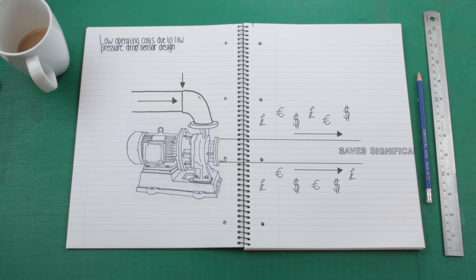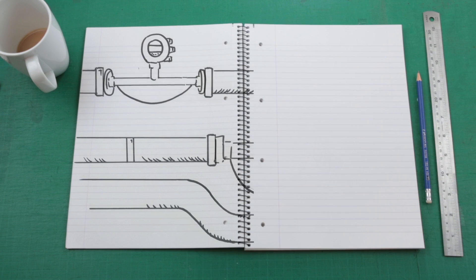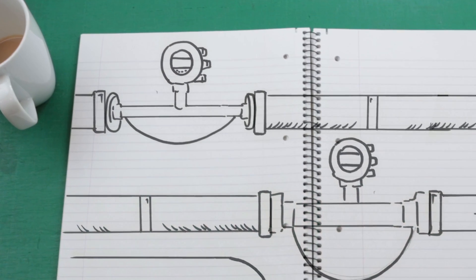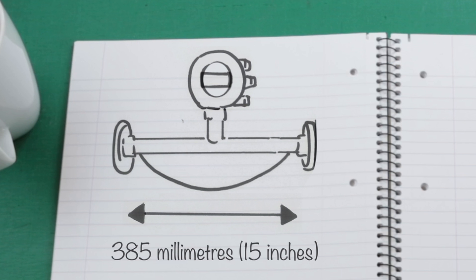Coriolis master meters are made for the most demanding industrial environments. For a half-inch meter, the installation length is just 385 millimeters, fitting into the tightest of spaces.